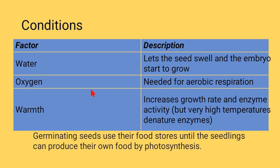A seed needs some favorable conditions for germination; otherwise the seed will remain in a dormant state for years. The basic requirements for a seed to germinate are: water, which helps the seed to swell up so the embryo starts to grow; oxygen, which is needed for aerobic respiration; and warmth, because enzymes speed up when temperature increases — but temperature higher than optimum will result in denaturing of enzymes, so optimum temperature is required.